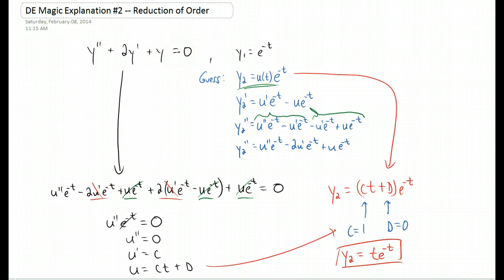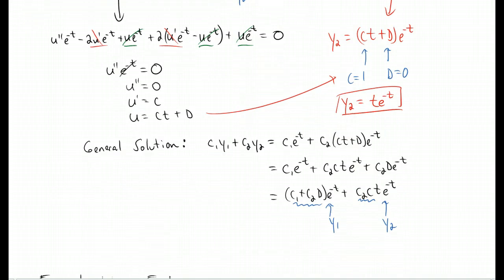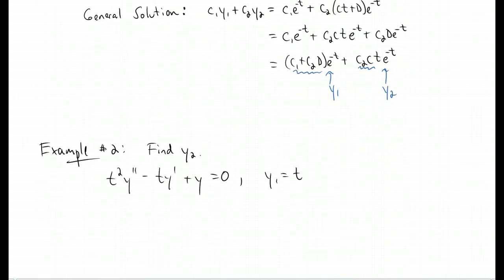Let's do another example, and this example will show you why it's actually called reduction of order in the first place. Here is example two. All you want to do is find the second linearly independent solution to this differential equation. You're given that the first one is t.